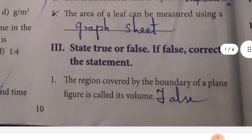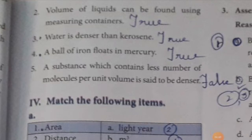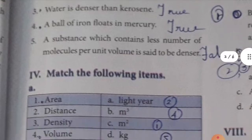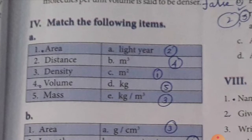Now for true or false. First one: the region covered by the boundary of a plane figure is called its volume — this statement is false. Second: volume of liquids can be found using measuring containers — true. Third: water is denser than kerosene — true. Fourth: a ball of iron sinks in mercury — true. Fifth: a substance which contains less number of molecules per unit volume is said to be denser — false.